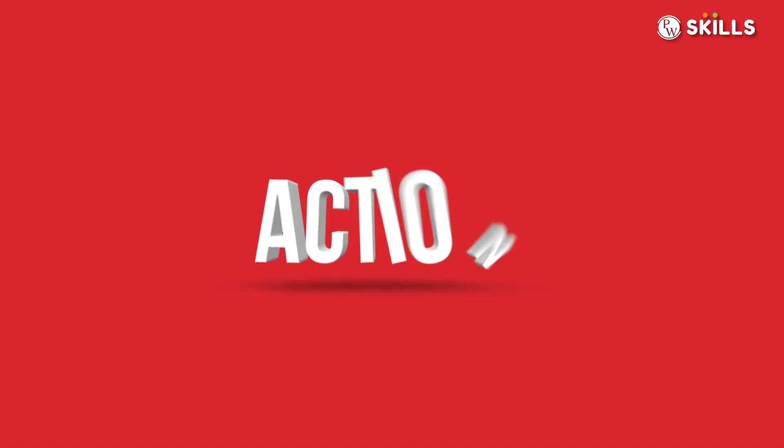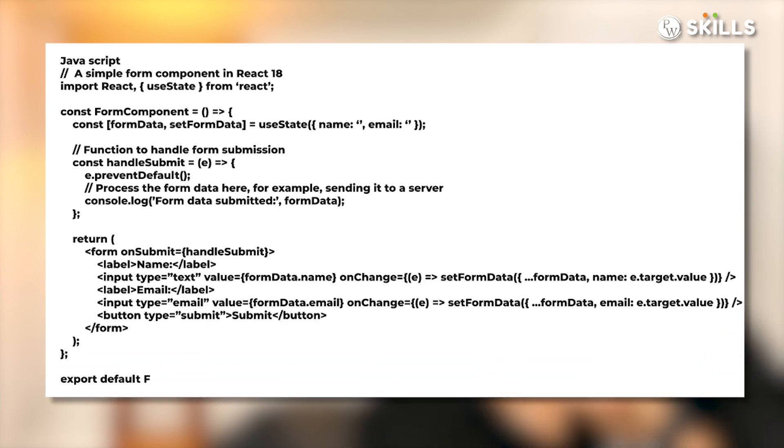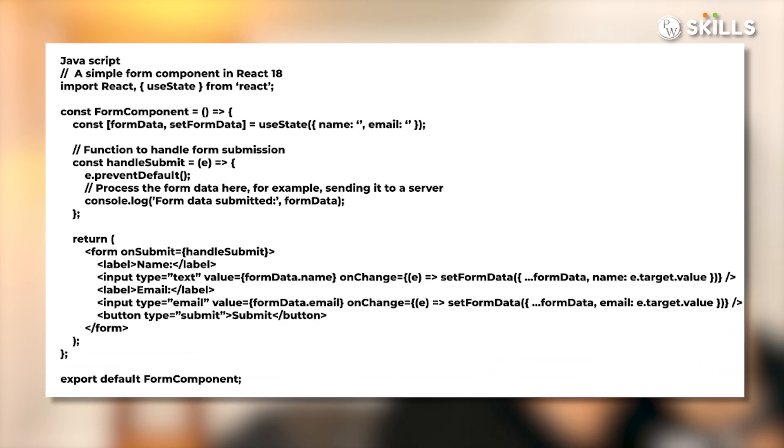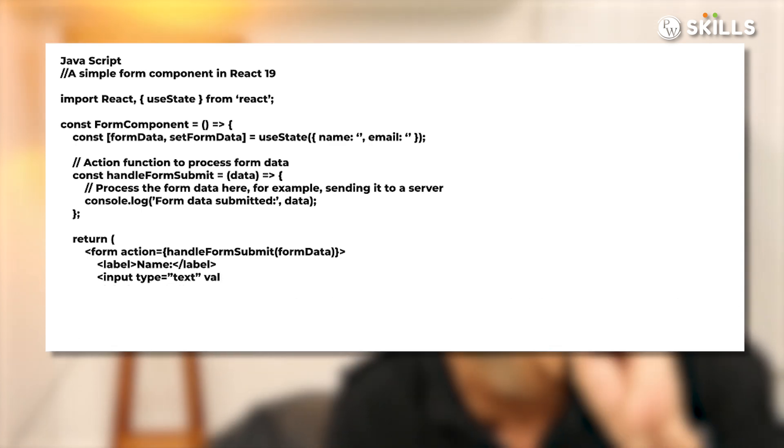The second strong feature in React 19 is called Actions, which will redefine the way you handle forms. Conventionally in your forms there are multiple fields — for example, name, age, address — and you have to process a submit button. Now with React 19 Actions, you don't need to explicitly click the submit button. As soon as you enter these values, they are automatically and very smoothly processed. This Actions feature is going to redefine how you handle forms in your web applications.